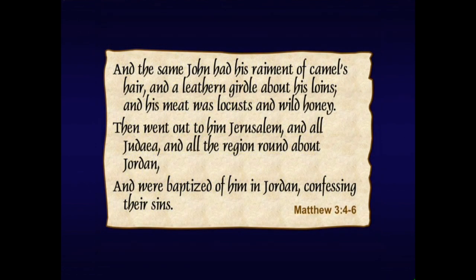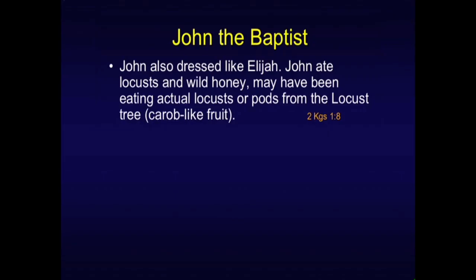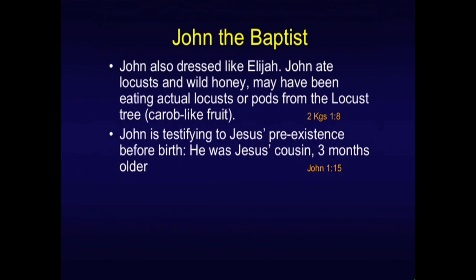John had his raiment of camel's hair, a leather girdle about his loins, and his meat was locusts and wild honey — though it might have been pods from the locust tree, which is like a carob-like fruit. Then went out to him Jerusalem and all Judea and all the region round about Jordan, and were baptized of him in Jordan, confessing their sins. He was dressed like Elijah. John is also testifying to Jesus' pre-existence before birth — because he was Jesus' cousin, three months older — yet he treats Jesus as having pre-existed. You won't pick that up unless you watch for it.